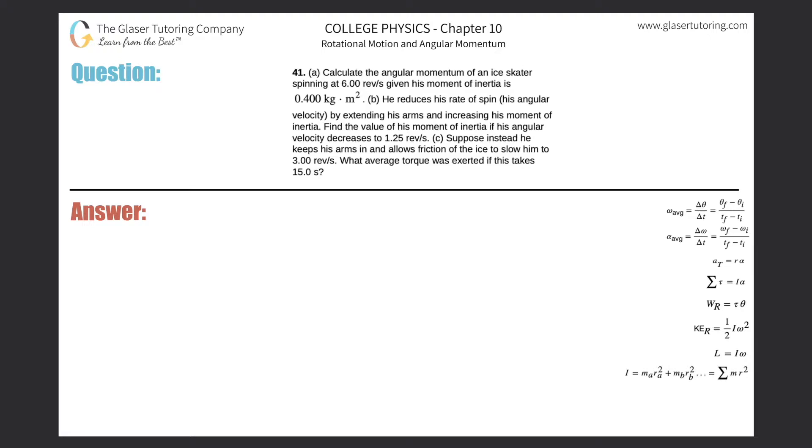Number 41, letter A. Calculate the angular momentum of an ice skater spinning at 6 revolutions per second given his moment of inertia is 0.4 kilogram meter squared. Alright, so they're asking us for angular momentum. That is L in terms of the variable.